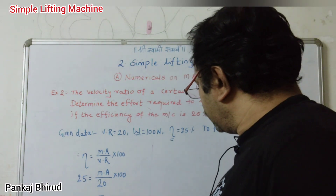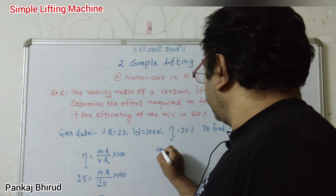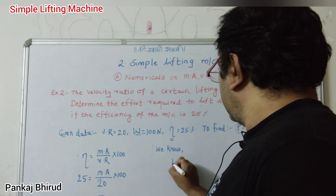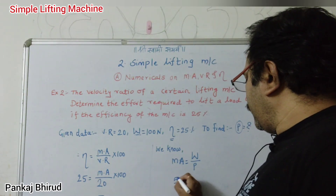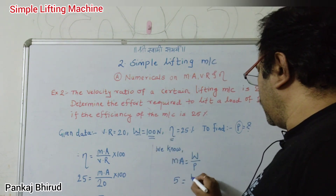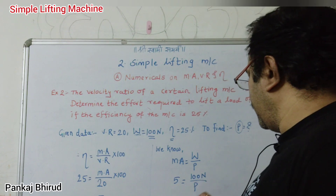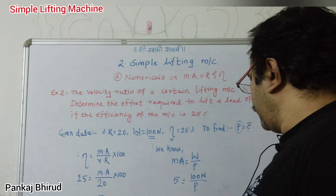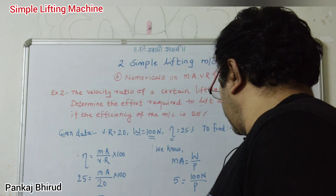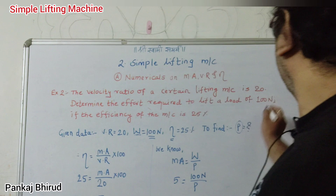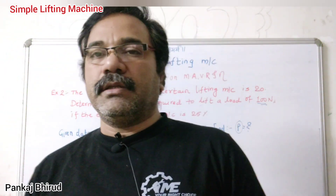Now, MA = 5. Using MA = W upon P, we put 5 = 100 upon P. Therefore P = 100 upon 5 = 20 Newton. So the effort required to lift the load of 100 Newton is 20 Newton. In this way, we can calculate the unknown term by using simple formulas.